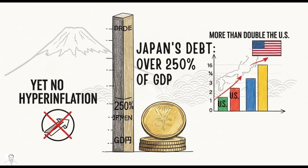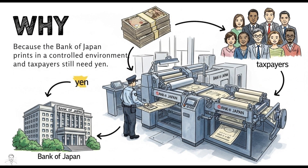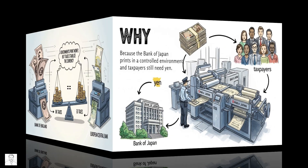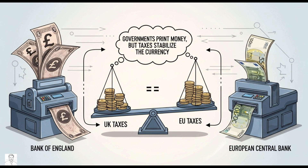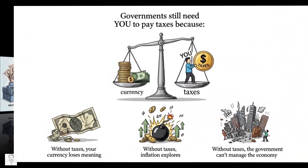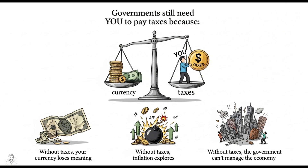Japan's debt is over 250 percent of its GDP — more than double the US — yet no hyperinflation. Why? Because the Bank of Japan prints in a controlled environment and taxpayers still need yen. The UK and EU tell the same story: governments print money, but taxes stabilize the currency.